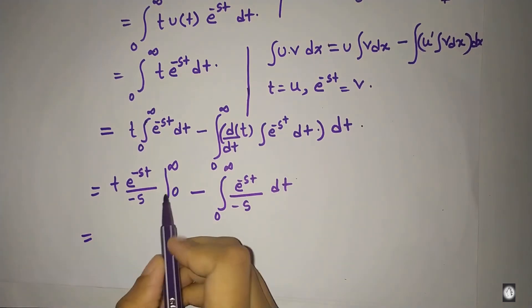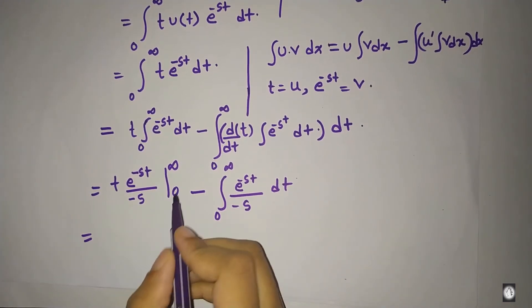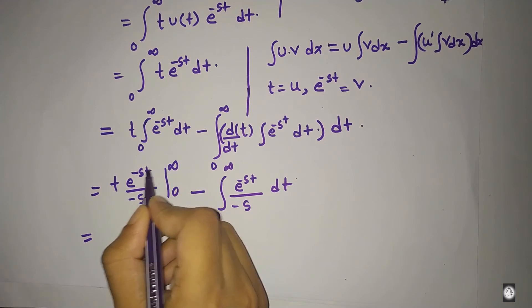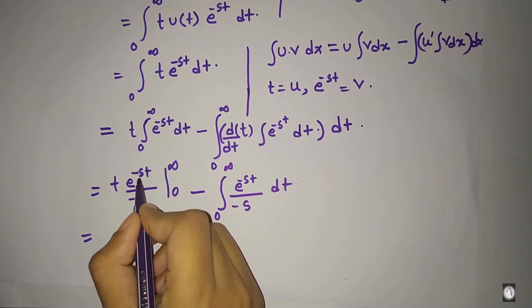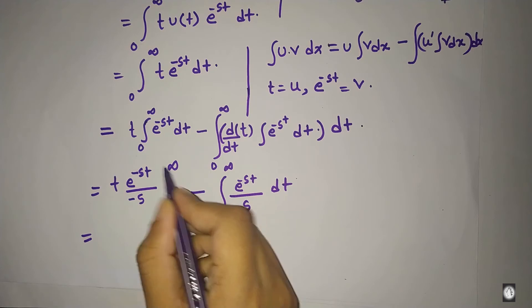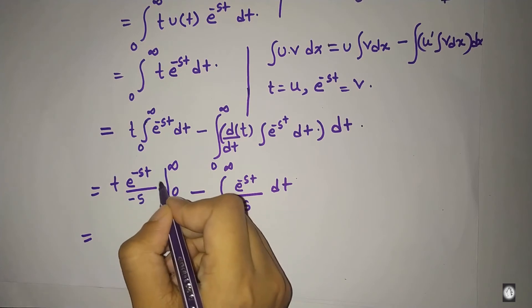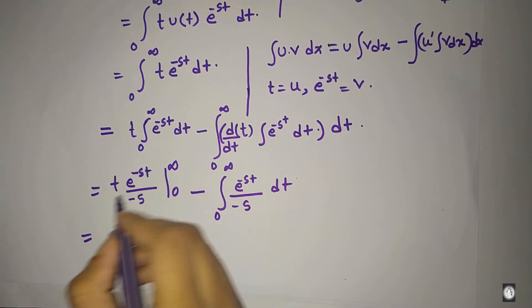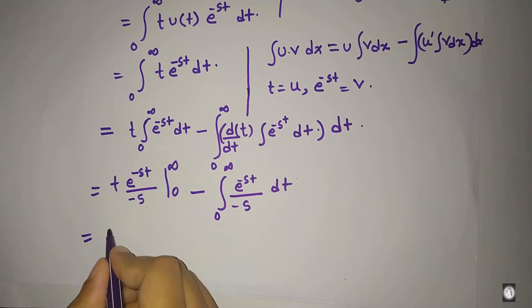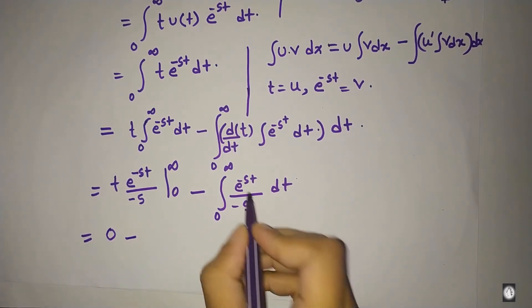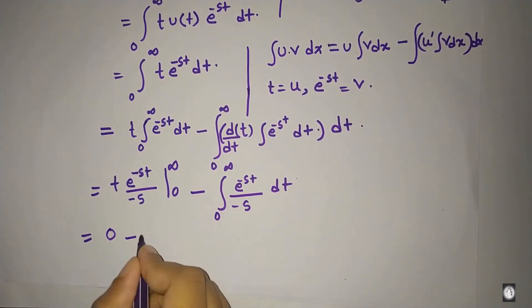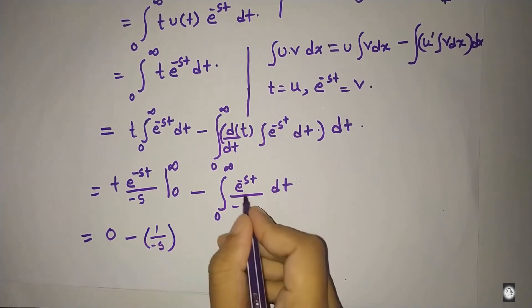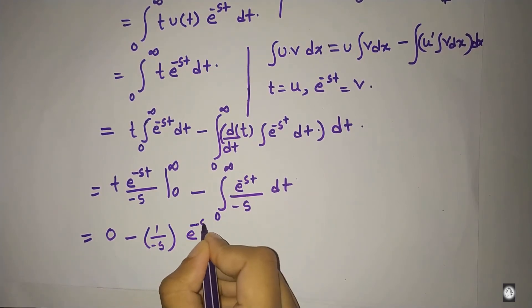Simply, the first part: substituting the limit at infinity — t·e^(-st) as t goes to infinity becomes 0, and at t = 0 it is 0 times 1 which is also 0. So the entire first part equals 0.